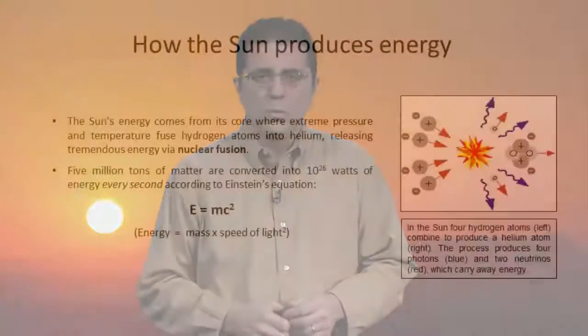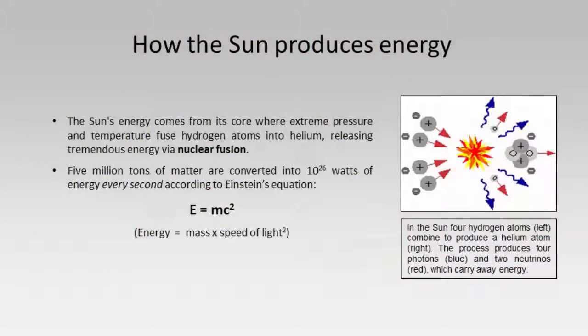When you think about some of our most powerful nuclear weapons, they may only have a few pounds of fuel and yet can devastate a city. This is possible because of Einstein's famous equation, E equals MC squared — where E equals energy and M equals mass. A very small amount of matter can make a very large amount of energy, and in the Sun, a large amount of mass creates an enormous amount of energy.